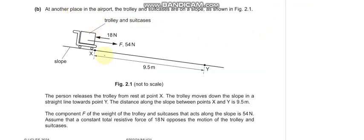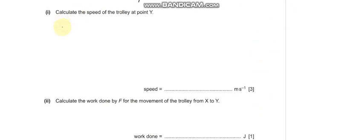Part B: at another place in the airport, the trolley and suitcase are on a slope as shown in figure 2.1. The person releases the trolley from rest at point X, and it moves down the slope towards point Y. The distance along the slope between X and Y is 9.5 meters. The component f of the weight along the slope is 54 newtons, and the total resistive force is 18 newtons opposing the motion.